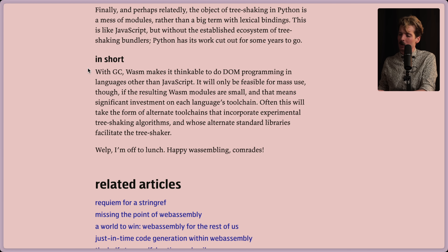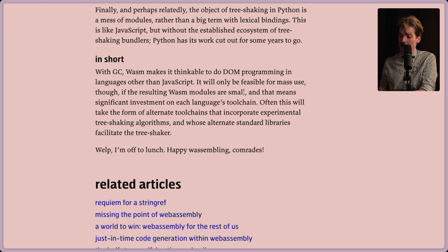In short: with garbage collection, Wasm makes it thinkable for the first time to do DOM programming in languages other than JS. It will only be feasible for mass use, though, if the resulting Wasm modules are small, and that means significant investment on each language's toolchain. Often this will take the form of alternative toolchains that incorporate experimental tree-shaking algorithms and whose alternative standard libraries facilitate the tree shaker.